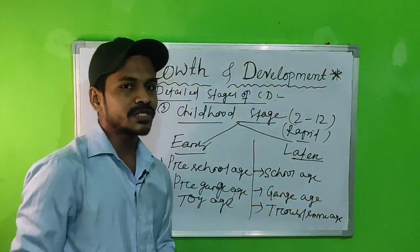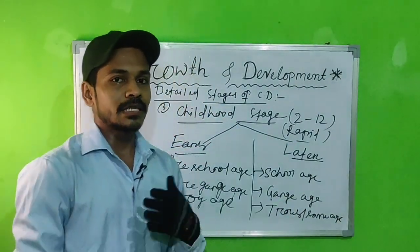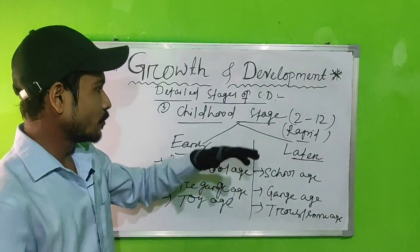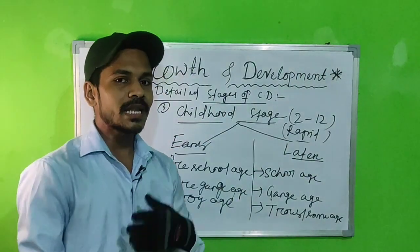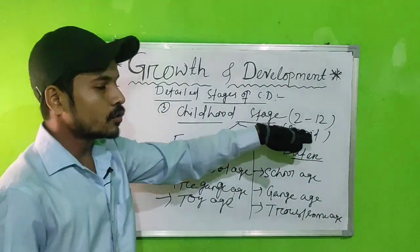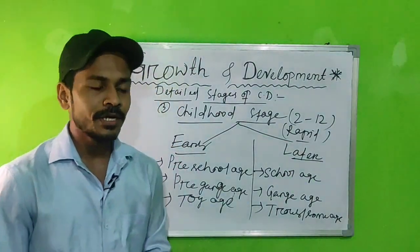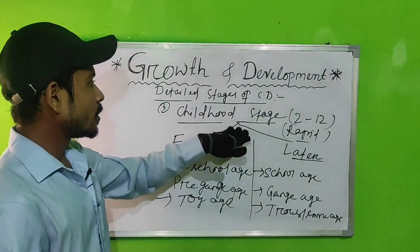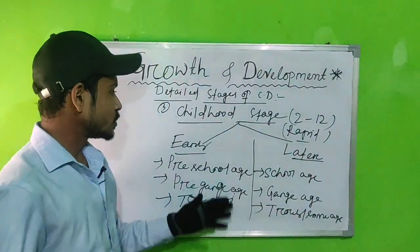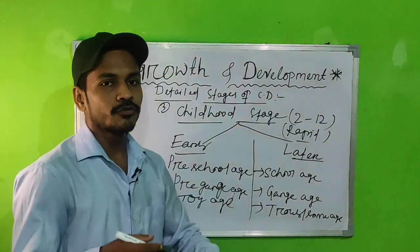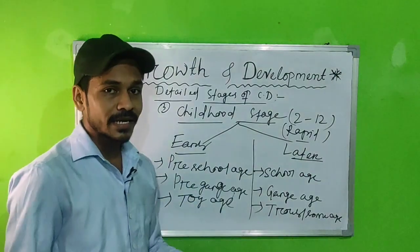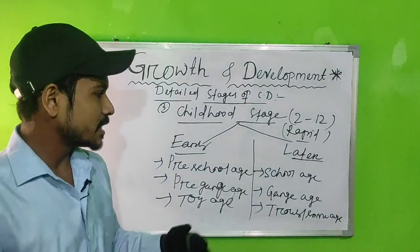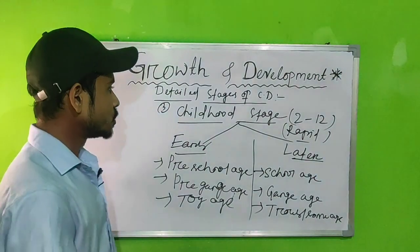Childhood is called a rapid stage because language development is rapid in this stage — humans can develop their language in a rapid manner. Socialization also occurs rapidly in the childhood stage. Another difference: in early childhood, children are egocentric in nature, but in later childhood they become less egocentric.